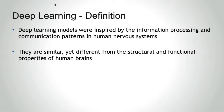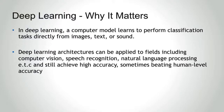Deep learning models were originally inspired by the human nervous system. They are similar but structurally different from the human brain. Deep learning is a method of data analysis that automates the analytical model building — a branch of artificial intelligence based on the idea that systems can learn from data, identify patterns, and make decisions with minimal human intervention.